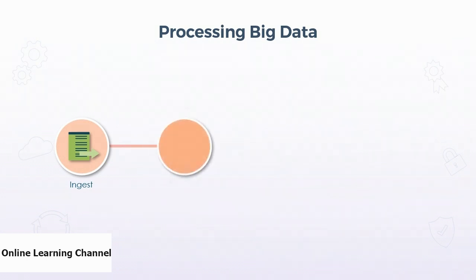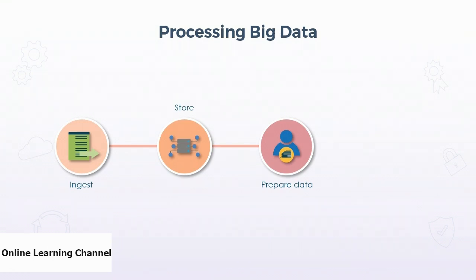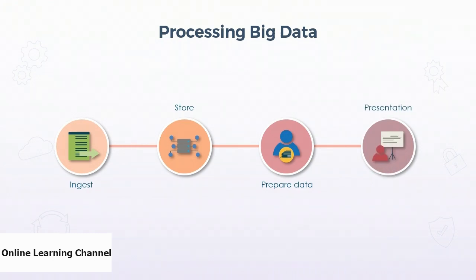Second, data ingested from multiple sources requires a centrally accessible storage platform; the data lake offers storage capabilities for mixed data types from many sources. Third, data preparation is the process of removing bad data, transforming data to a usable state, and pulling samples into usable blocks — this is also the stage where training models for data science efforts take place. Fourth, the purpose of the data analysis solution is to determine the answer to questions posed by the business; the presentation layer abstracts the answers from the querying process and generates reports and visualizations for businesses to consume.